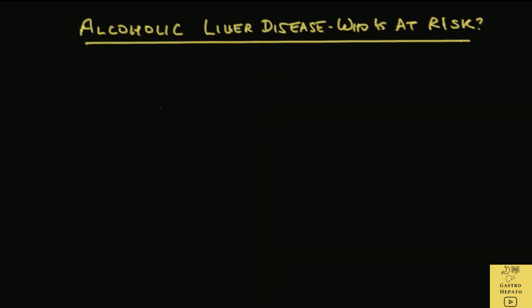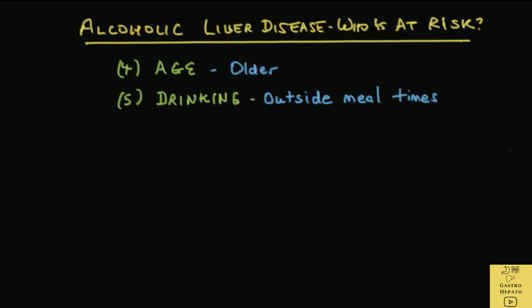Other factors include age — older patients are more vulnerable compared to younger people. Drinking outside mealtimes is bad, as in the absence of food in the stomach there is rapid absorption of alcohol into the bloodstream. Rapid absorption results in spikes of blood alcohol, which overwhelms the ability of the liver to detoxify the alcohol.